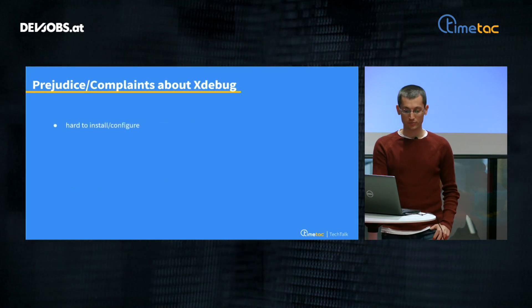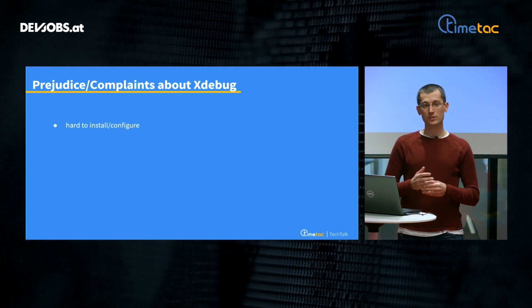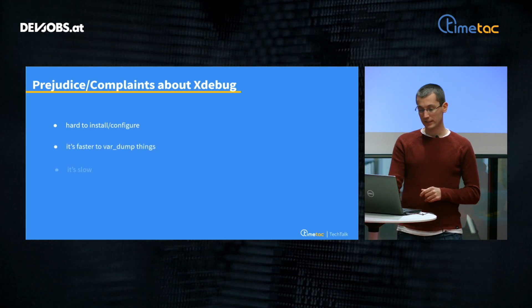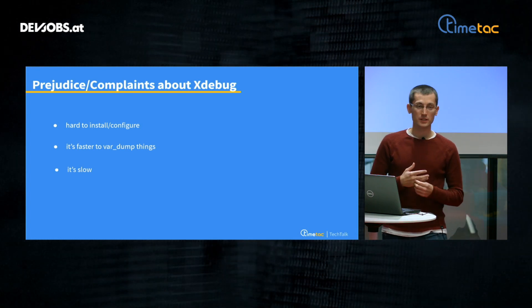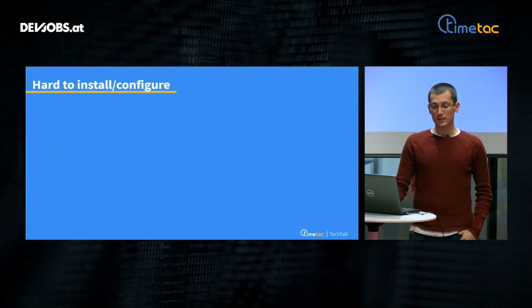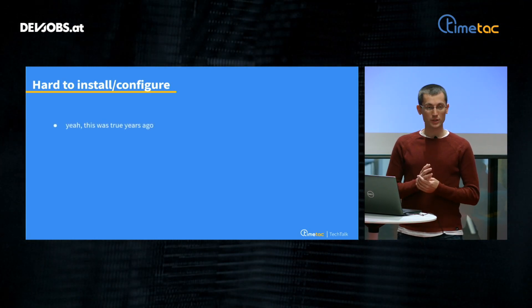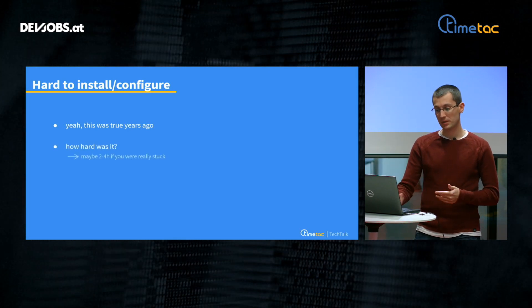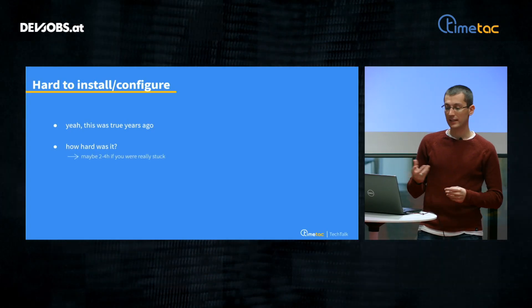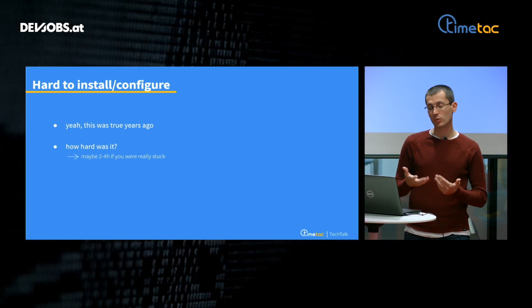First, about complaints. There are three main complaints about Xdebug: that it's hard to install or configure, that it's faster to var_dump things, or that it's slow. I will go through these three complaints and try to prove that they are not true, and that there is much more benefit to using Xdebug than everyone is thinking. The first one is 'hard to install or configure.' This was true years ago — it was maybe two to four hours if you were really stuck. I had the same problems when I started using it six or seven years ago, where you needed multiple sources to get it right, and people got stuck and didn't want to continue.